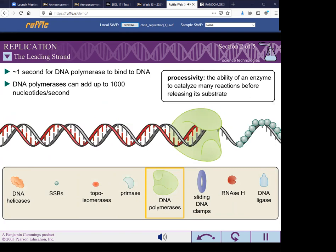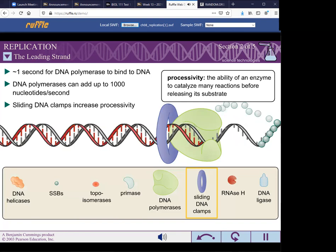To increase the degree of processivity of DNA polymerases, a sliding DNA clamp surrounds the DNA and binds to DNA polymerase, holding them together.